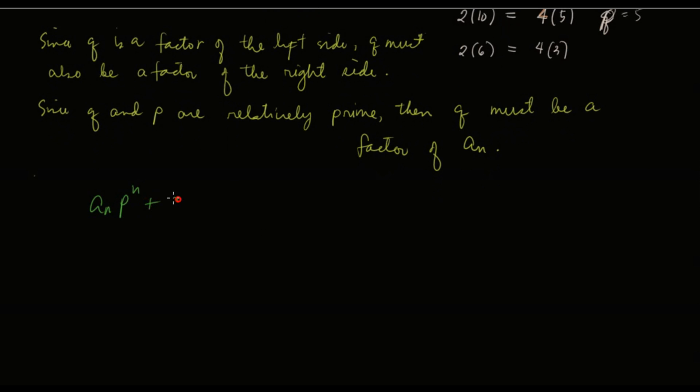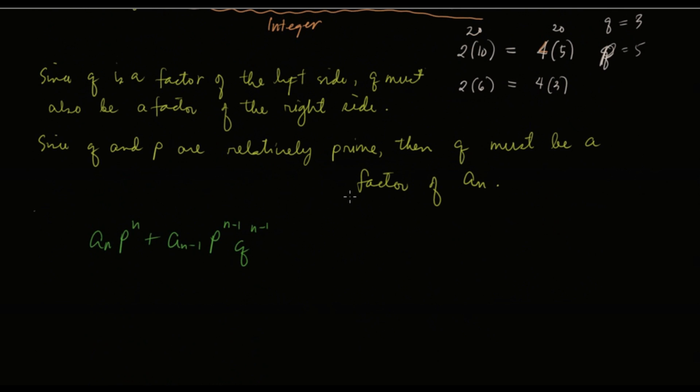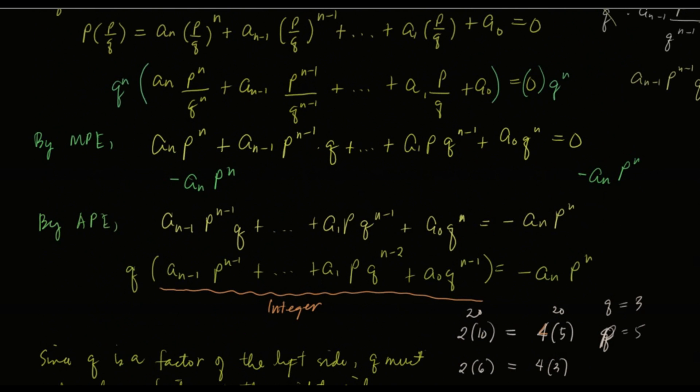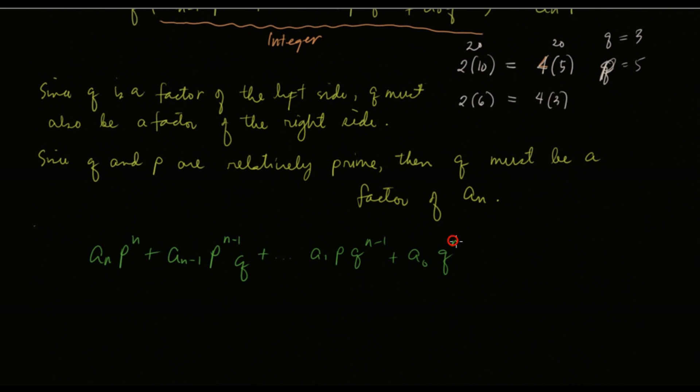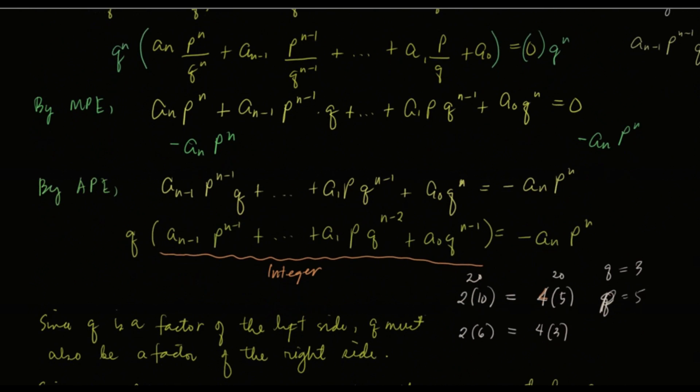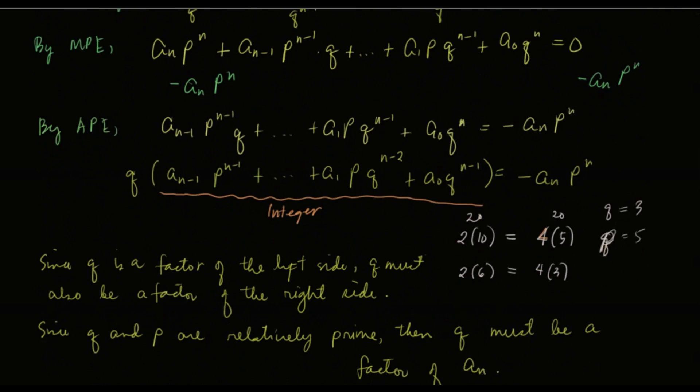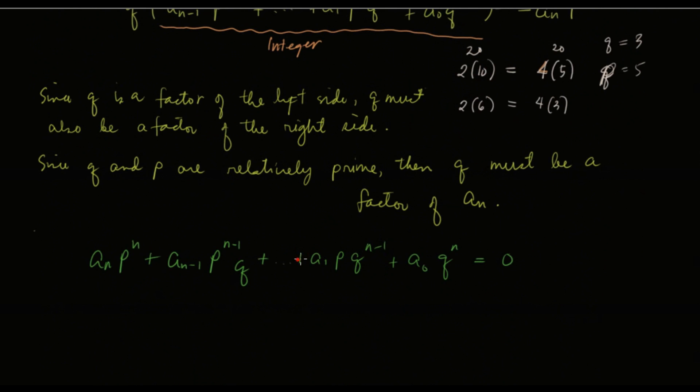Plus a sub n minus 1, p raised to n minus 1, q. Plus up to a sub 1 p q raised to n minus 1. Plus a sub 0 q raised to n is equal to 0. Let me put here part 2.